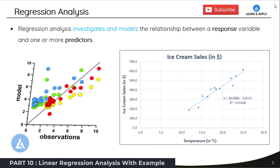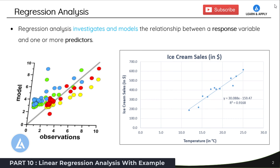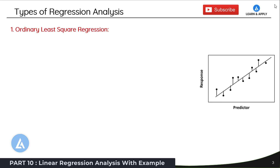In this example, we get the regression equation as y = 30.088x - 159.47. That means if you know the value of x at any point of time, we can calculate the value of y. We are going into detail to understand how this regression equation is formulated and what the interpretation of it is. Before taking the example and performing regression analysis in Microsoft Excel, please understand the types of regression analysis.